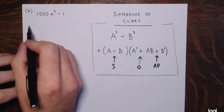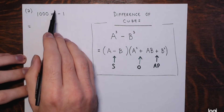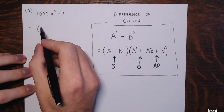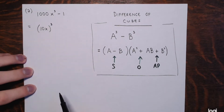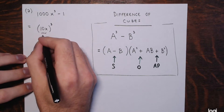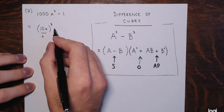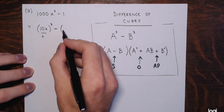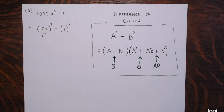So the difference of cubes factoring formula: a cubed minus b cubed factors to a minus b times a squared plus ab plus b squared. The only difference from the sum of cubes formula are these two signs — in sum of cubes it was plus then minus; in difference of cubes it's minus then plus. Now for this next example: 1000 is 10 cubed, so 1000x cubed is 10x to the third power, making 10x our a. And 1 is 1 cubed — one to any finite power is one — so 1 is our b.